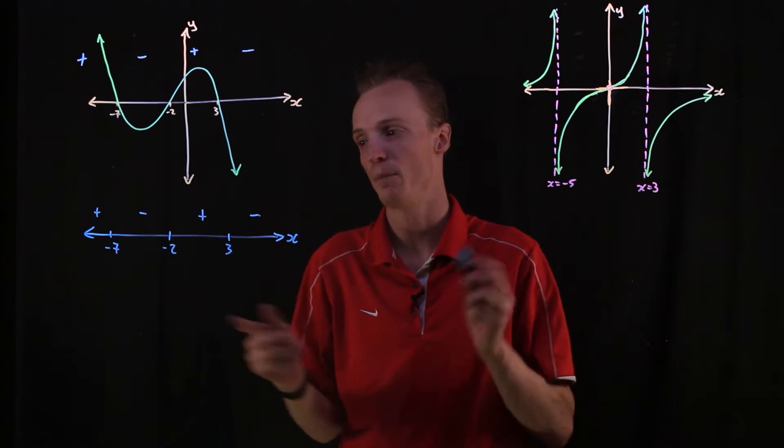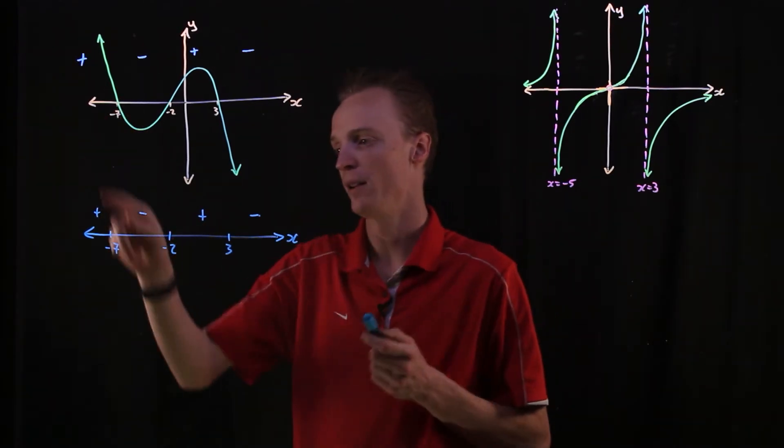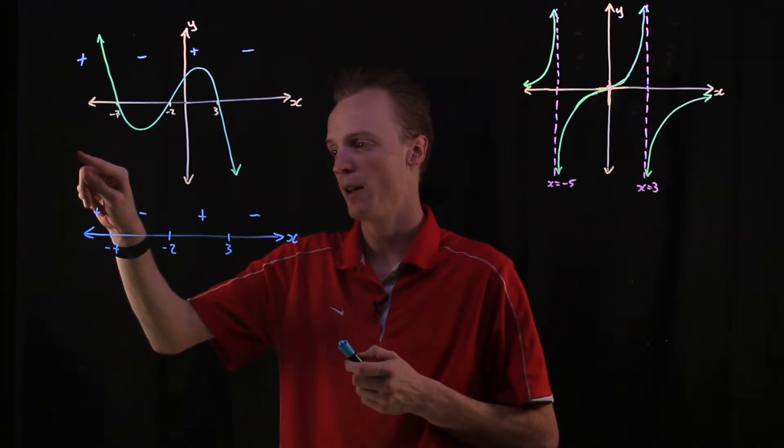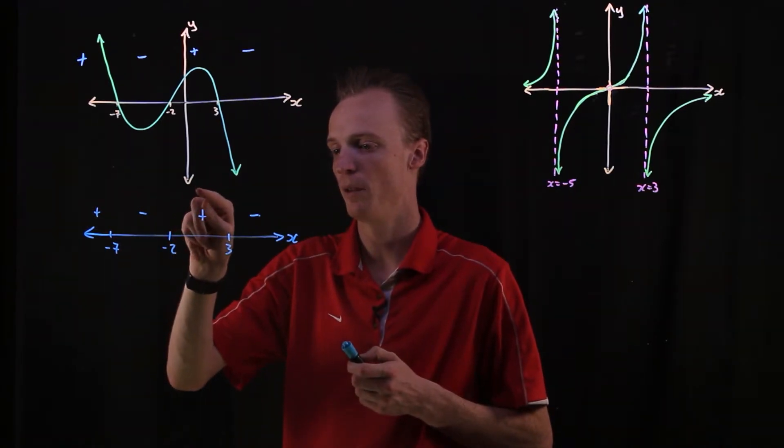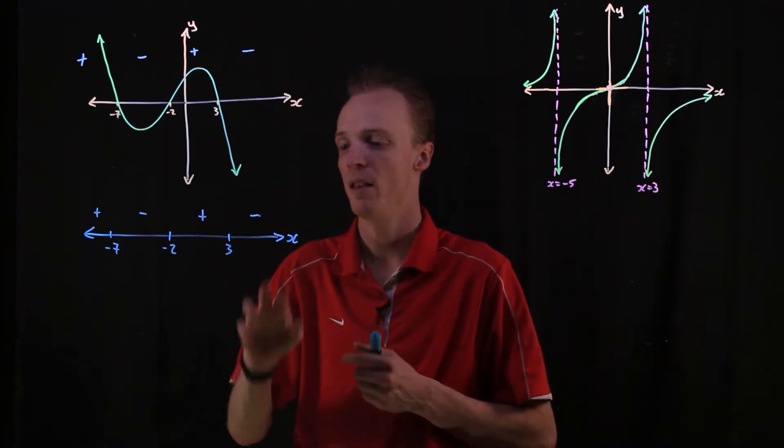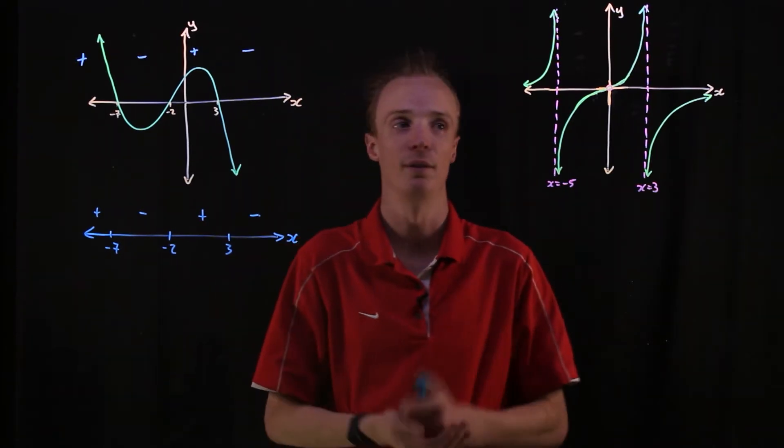Now if we're given this information, we could provide a sketch like we did here. Because we know that it will start up here, it will cut through and become negative. It will cut through again, become positive. Then it will cut through down here and become negative again. That's what the sign diagram shows.